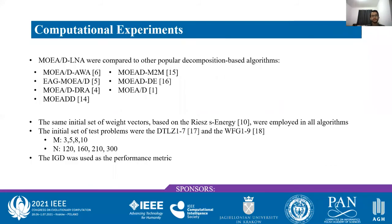I'm going to present our computational experiments. MOEA/D-LNA was compared to other popular decomposition-based algorithms, all using the same initial set of weight vectors based on the RIS-S-Energy method. The test problems were DTLZ 1 to 7 and WFG 1 to 9, tested on 3, 5, 8, and 10 objective dimensions. Population sizes of 120, 160, 210, and 300 were used to observe how weight vectors adapt with lower population counts. The IGD metric was used as the performance measure, as it is recommended for high-dimensional problems.